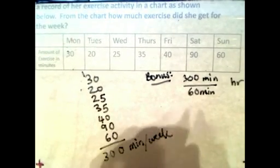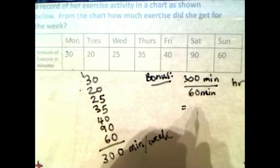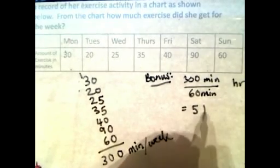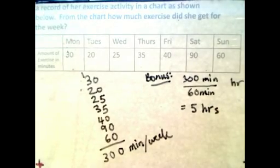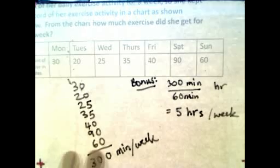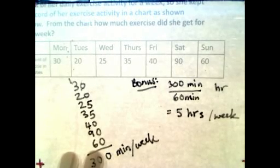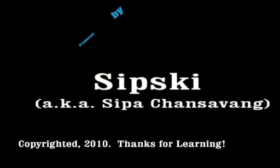So 300 divided by 60 will give you approximately, if not the exact number, 5 hours. Five hours. You can do this for me.